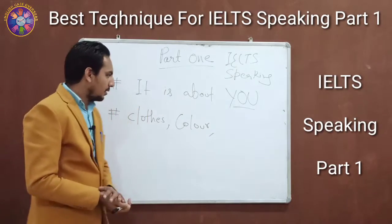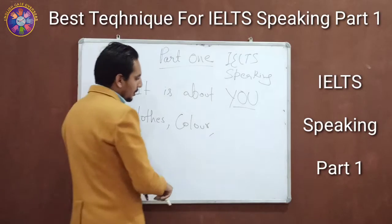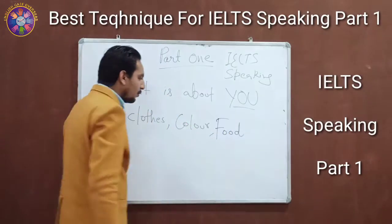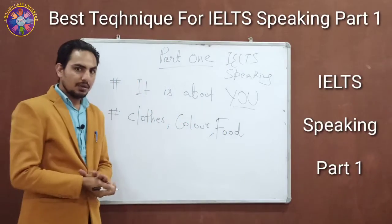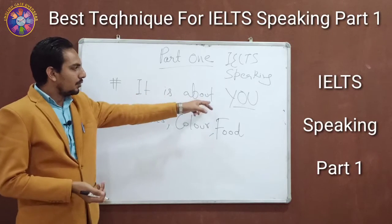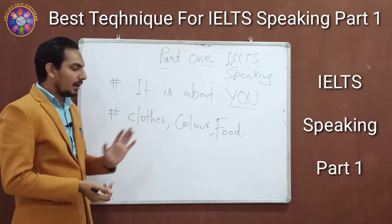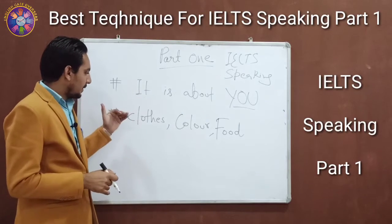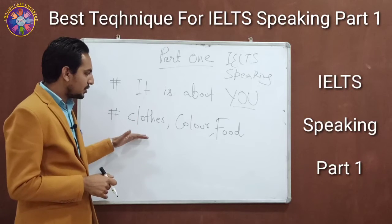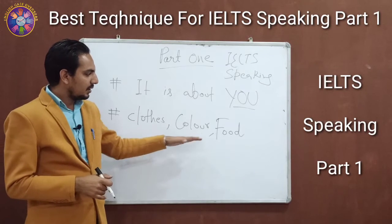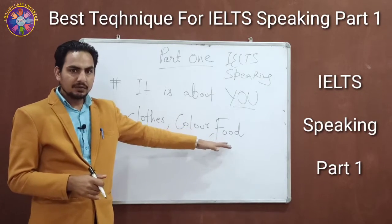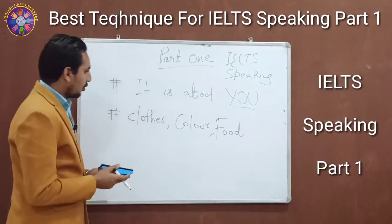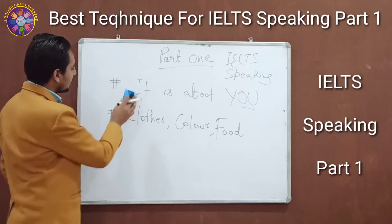They might also talk about your favorite color — which one is your favorite color and why — or your favorite food. As I told you, part 1 is about you. You don't have to talk about other people; you only have to answer direct questions: what type of clothes you wear, what is your favorite color, what type of food you like. All the questions are related to you.